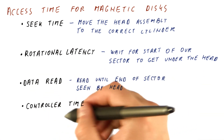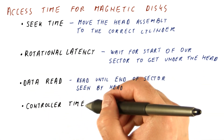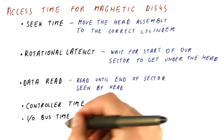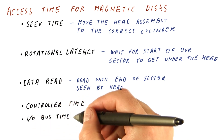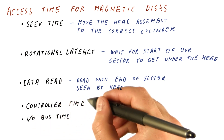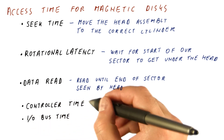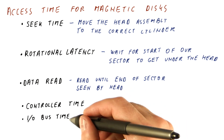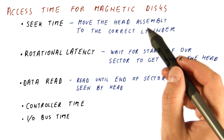Then there is some controller time for the controller to actually check the checksum, determine that the sector is okay, and so on. And there is the IO bus time, which is how long it takes to get the data from the disk drive and its controller to the main memory.